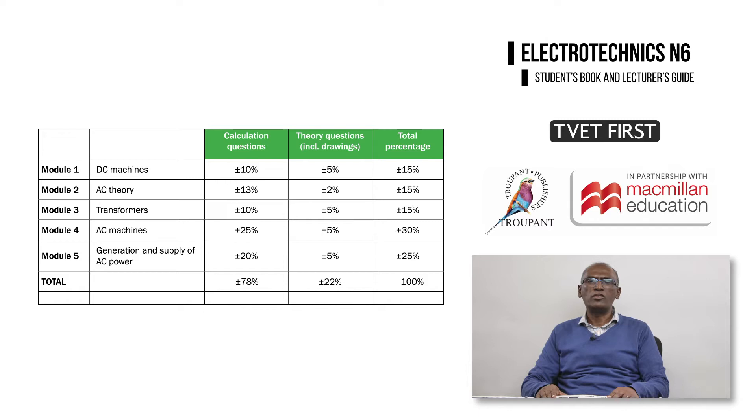Seven of the modules in the old curriculum have now been reorganized into five modules in the revised curriculum. Lecturers of the subject will know that modules 6 to 10 from the old syllabus and some learning outcomes from the other modules have not been examined in a long time. These outcomes have been removed completely from the 2021 syllabus.